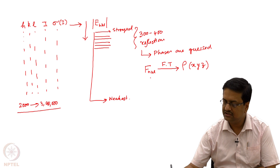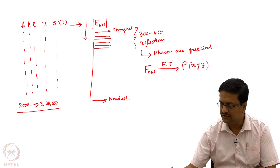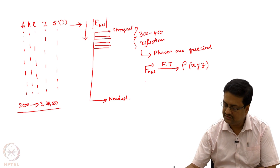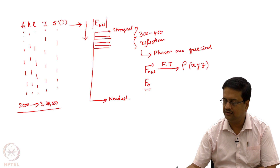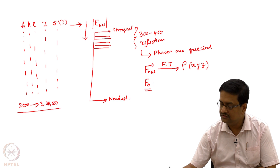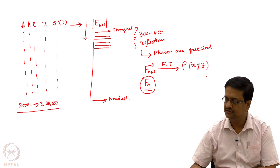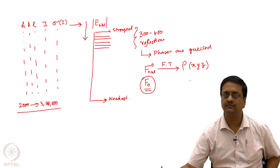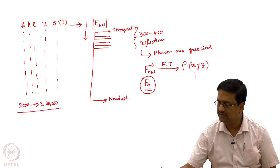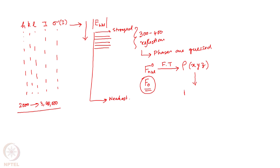This F(hkl) is sometimes written as Fo, or simply as F observed — the observed structure factor with the guessed value of phases — and it is used in the structure solution program for the Fourier transformation method. By doing this Fourier transform of F(hkl) to rho(x,y,z), what we get is a partial structure.